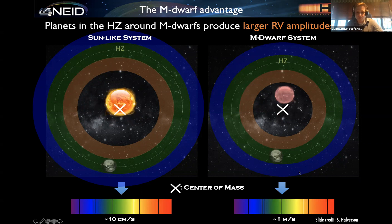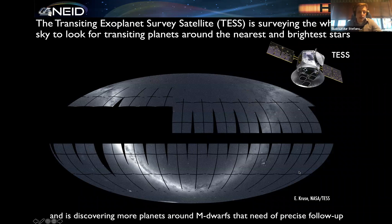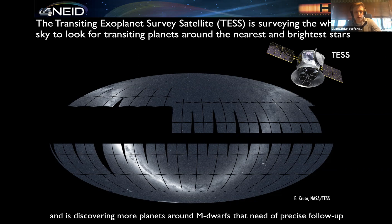The TESS mission — the Transiting Exoplanet Survey Satellite — is currently detecting and has already detected over 2,000 exoplanet candidates, most of which are actually planet candidates orbiting around nearby bright M dwarfs. TESS is an all-sky survey to look for transiting planets around the nearest and brightest stars. Because M dwarfs are so numerous and also our nearest neighbors, and because TESS has particularly good sensitivity to the red optical, TESS has detected hundreds of exciting planetary candidates around nearby bright M dwarfs that are in great need of high precision follow-up capabilities to accurately characterize these exciting systems, both with respect to their radii and their masses.